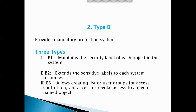B1 maintains the security label of each object in the system. B2 extends the sensitive label to each system resource — surfaces, storage, object support, power channels — and includes auditing of events. B3 allows creating trusted access to consultations and grants access to report access with given named objects.